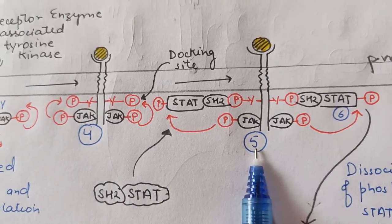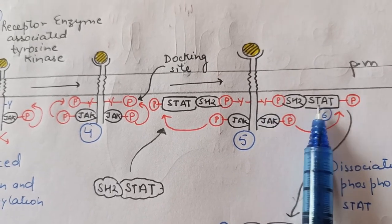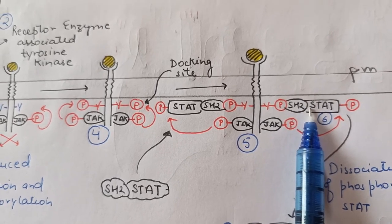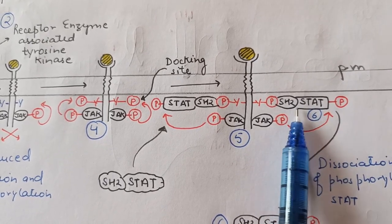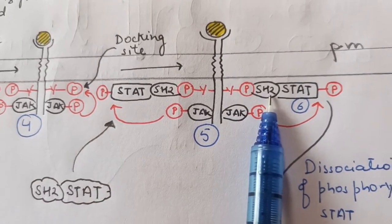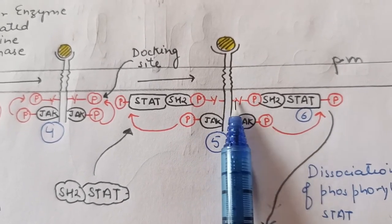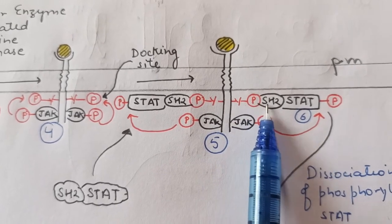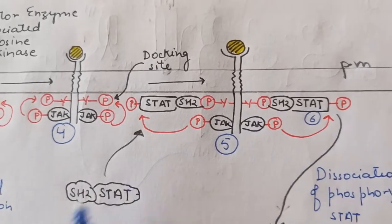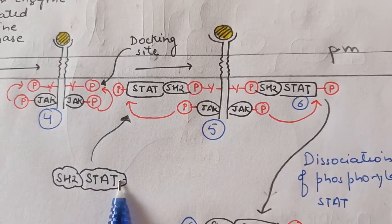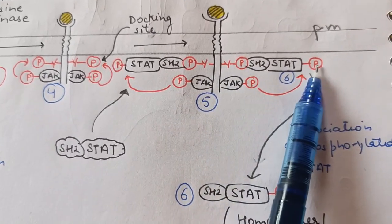In the next step, the tyrosine-phosphorylated part of the receptor provides a docking site where a protein called STAT binds. STAT — Signal Transducer and Activator of Transcription — has an SH2 domain, which is required for binding with the phosphorylated tyrosine molecule. The SH2 domain of STAT binds to the phosphorylated tyrosine, and STAT itself then gets phosphorylated.